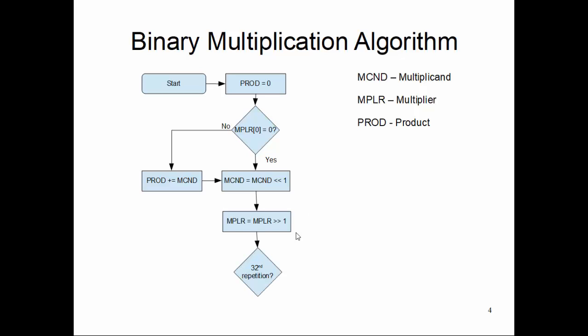We just shift the multiplicand to the left bit and multiplier to the right bit, and we go with the 32nd repetition. If it is not the 32nd repetition, we go back to testing the LSB of the multiplier and do the same process.